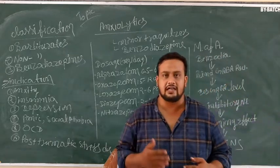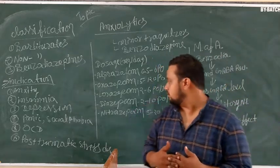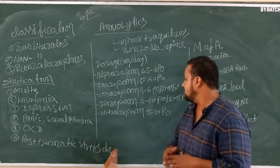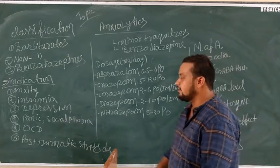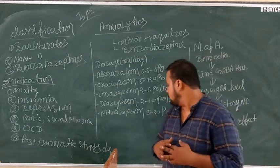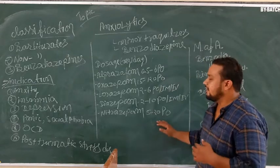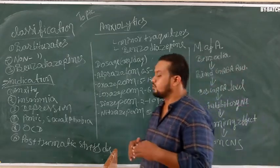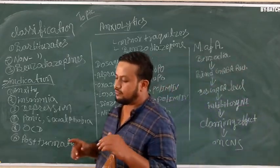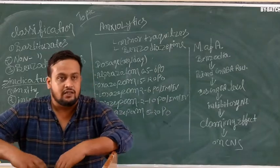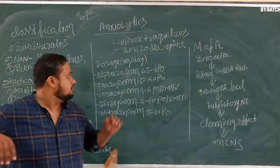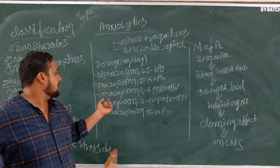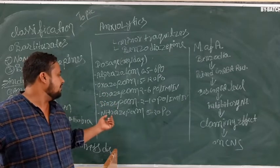Next, nitrazepam: 5 to 20 mg per day orally. So these are the choice drugs among anxiolytics: alprazolam, oxazepam, lorazepam, diazepam — these are the key drugs in this category.